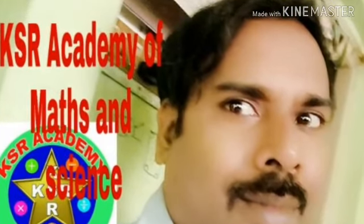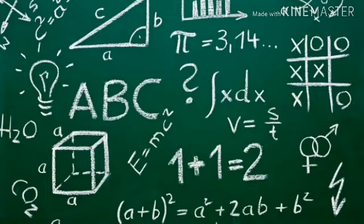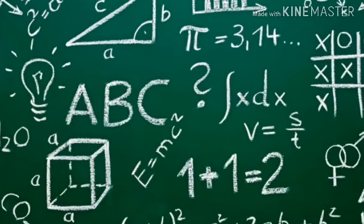23rd Question: If the tangent at any point on the curve x power 2 by 3 plus y power 2 by 3 equal to a power 2 by 3 intersects the coordinate axis in capital A and B, then AB is constant.